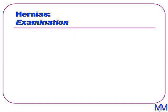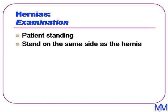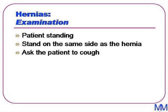Now onto examination. As in the history, it is actually quite simple and very much like any examination of a swelling. The patient should be standing unless it's a very obvious hernia. Don't forget we need to examine the contralateral side, and to definitely exclude a hernia the patient should always be standing. With the patient standing, we should stand on the same side as the hernia and ask the patient to cough — first observing and then feeling for the cough impulse.